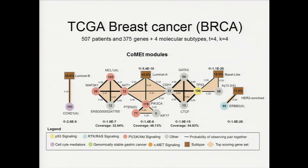We ran COMET on TCGA breast cancer data with four molecular subtypes. Not surprisingly, RB2 and CCND1 are highly associated with HER2-enriched and Luminal B subtypes respectively. The complete structure in the middle reveals subtle relationships due to subtype — for example, AKT1, PIK3CA, and CDH1 are highly related to Luminal A, and TP53 is highly associated with the basal-like subtype. We also see pathway-related structure: MAP3K1, MCL1, AKT1, PIK3CA, and PTEN form a strong exclusive pathway related to Luminal A. COMET can jointly capture exclusivity from both cancer pathways and subtype-enriched mutations.